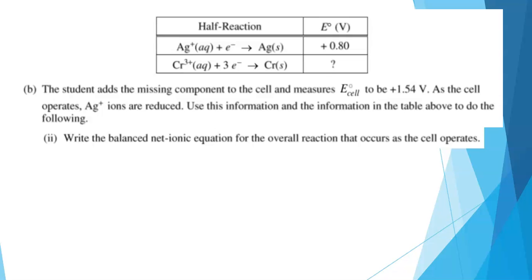Write the balanced net ionic equation for the overall reaction that occurs as the cell operates. Now, we already know that the silver ions are reduced, so we're going to keep the silver half reaction as written. However, we have to oxidize the chromium half reaction, as we were saying. So I have to flip the second reaction.